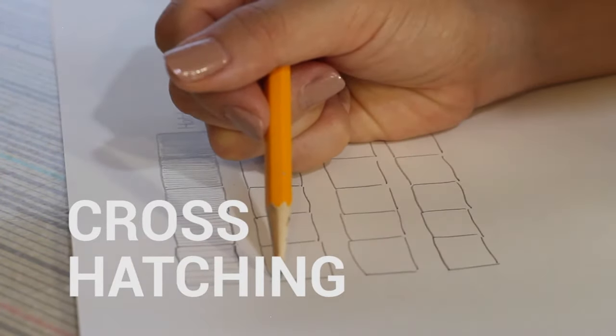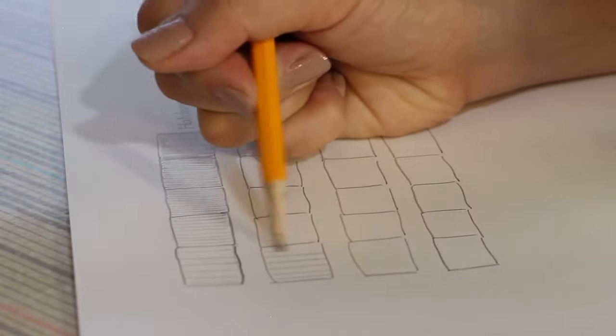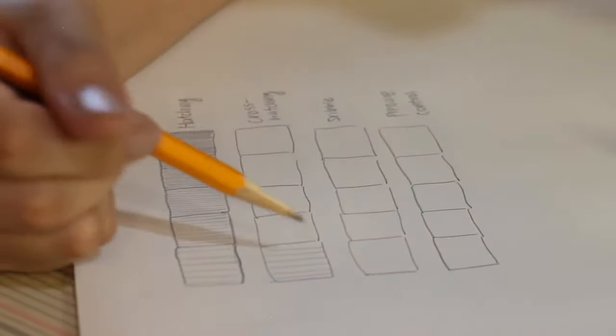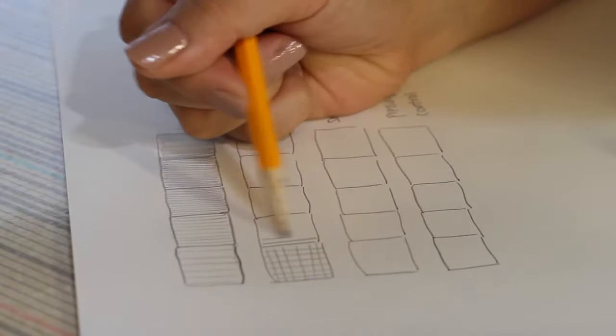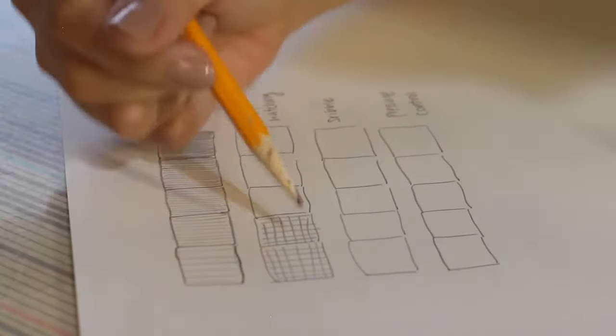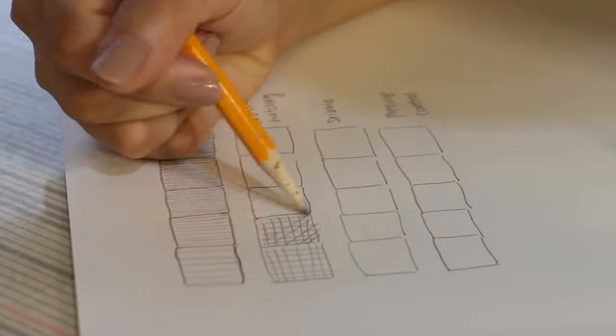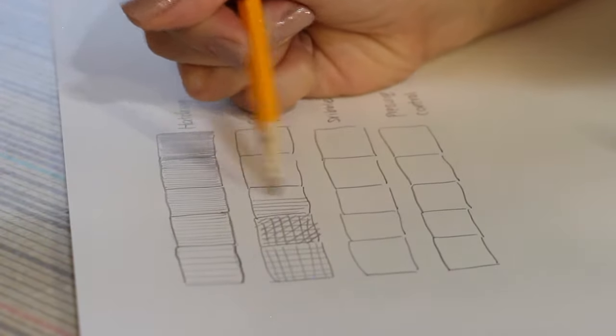Cross-hatching: Start with a series of parallel lines as well. This time, on top of these lines, add another series of lines at an angle. For the next box, do the same thing, but add one more series of lines at another different angle. Then continue with this pattern.